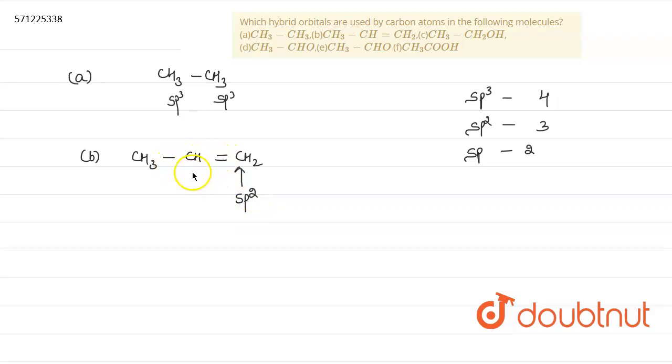Here, in this carbon, also has three sigma bonds. That's why it also forms SP2 hybridized state. And this carbon has four sigma bonds there. That's why its hybridization will be SP3.